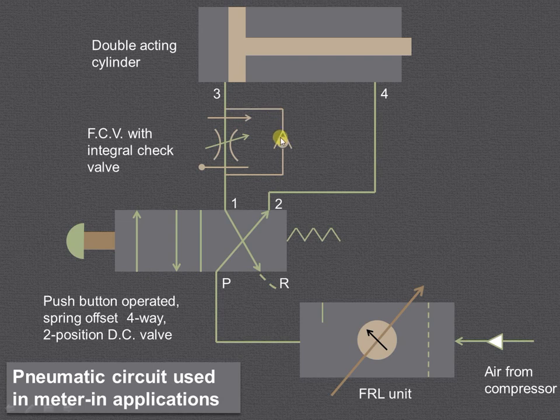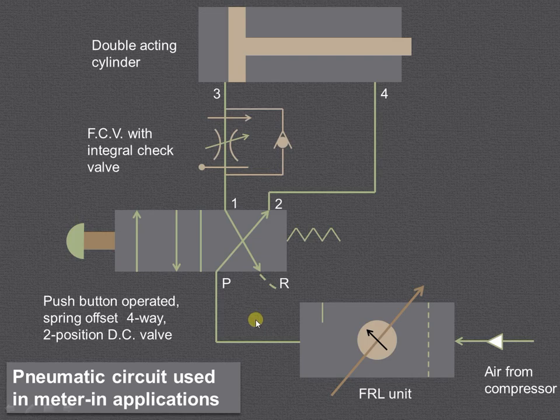The air from the other side can easily go through this particular check valve because it is a free flow condition, so there is no restriction. It can easily pass through the flow control valve, and then from port 1 it will go to R, which is the atmosphere.